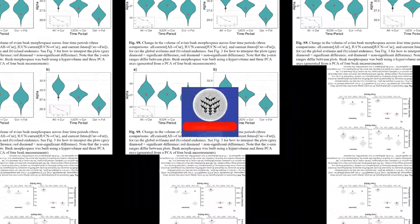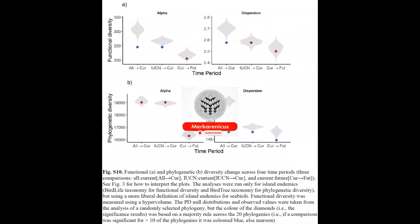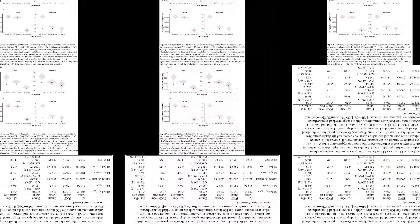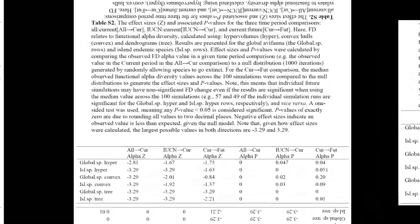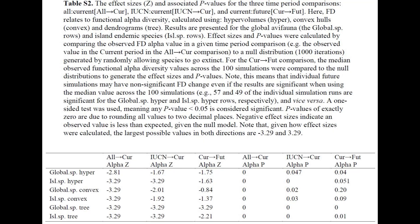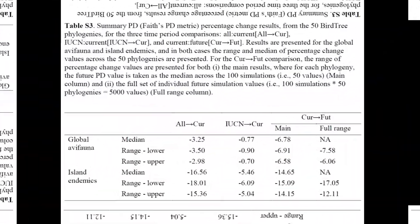The paper titled 'The Global Loss of Avian Functional and Phylogenetic Diversity from Anthropogenic Extinctions' utilizes the most extensive data set compiled to date regarding all known bird extinctions during the late Pleistocene and Holocene.